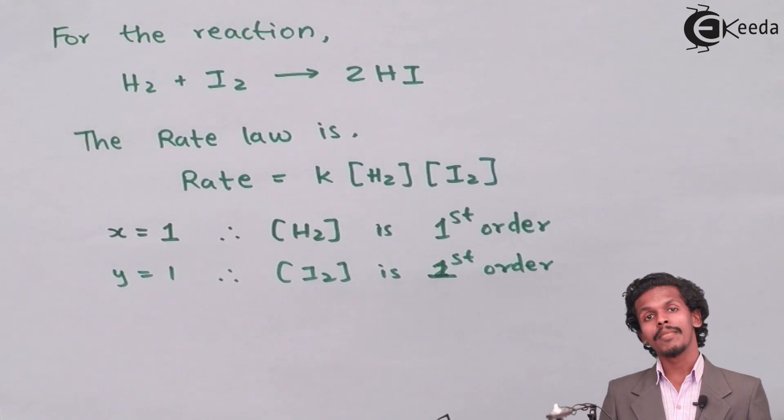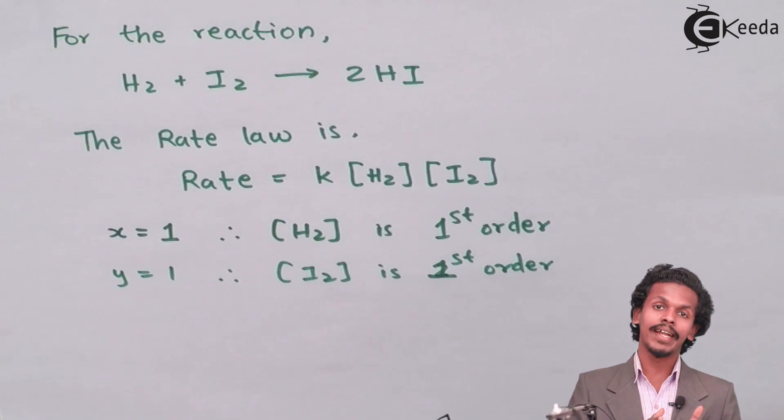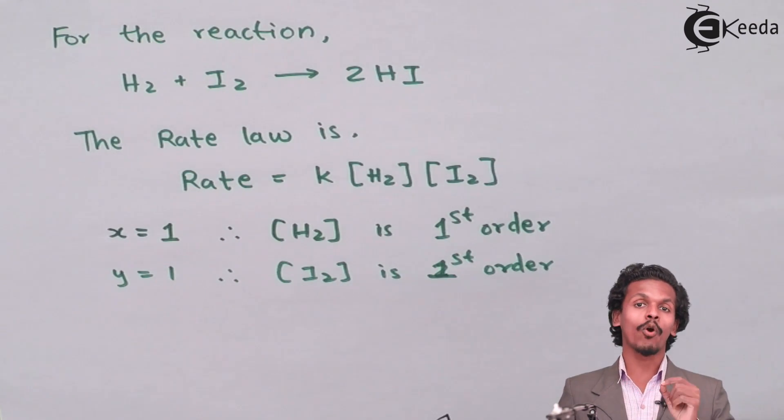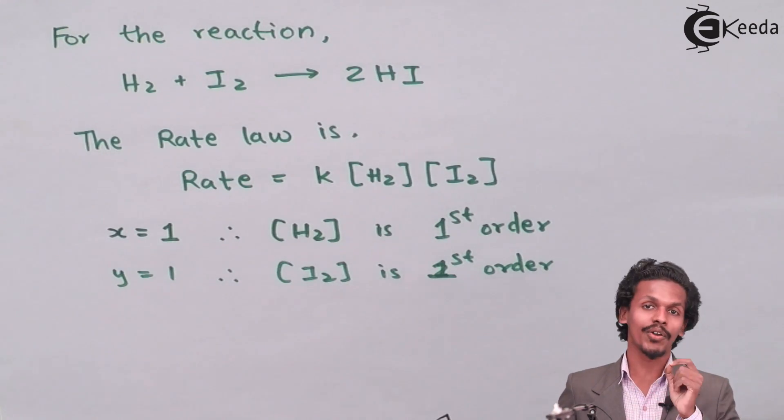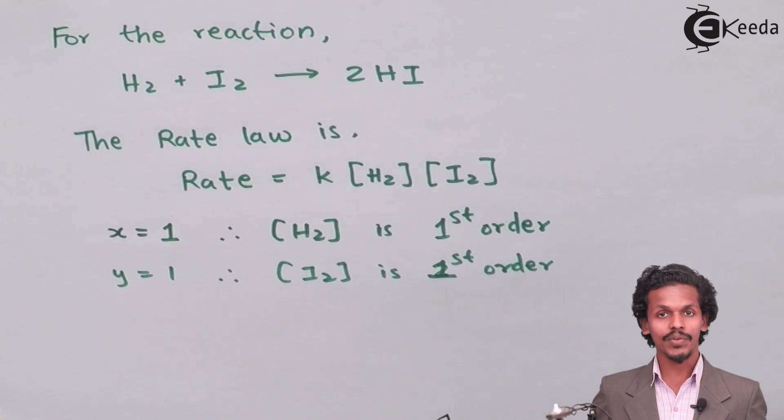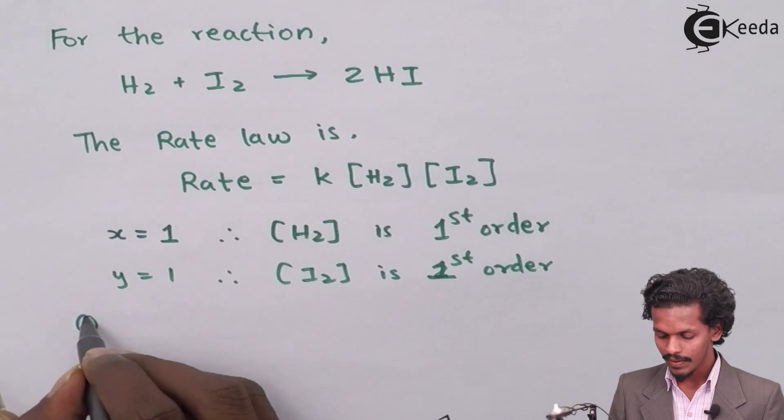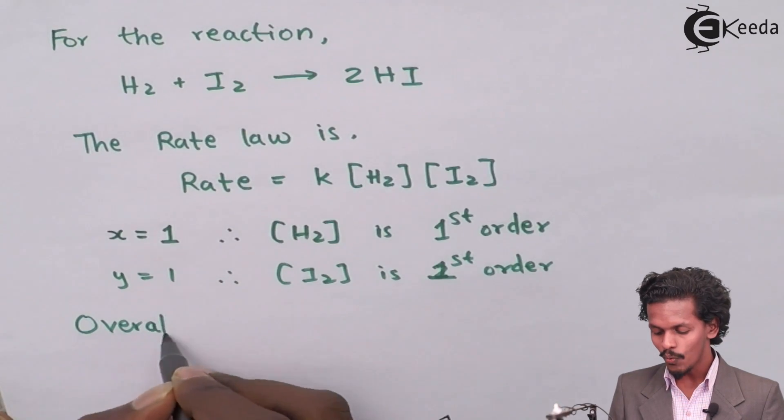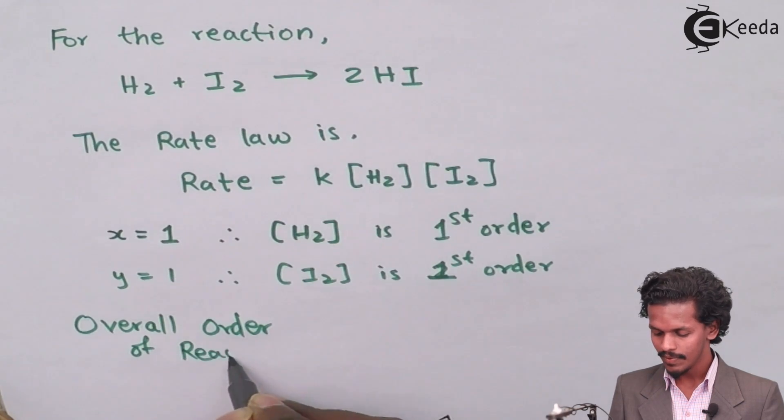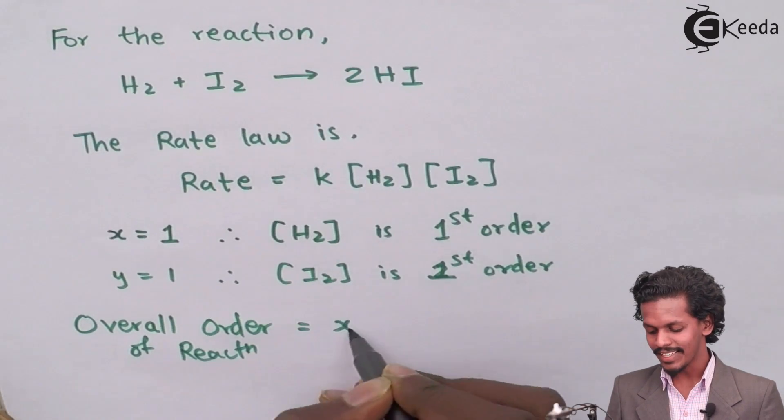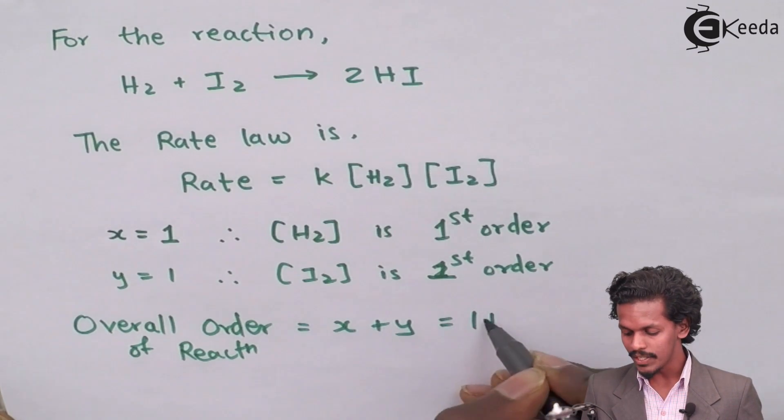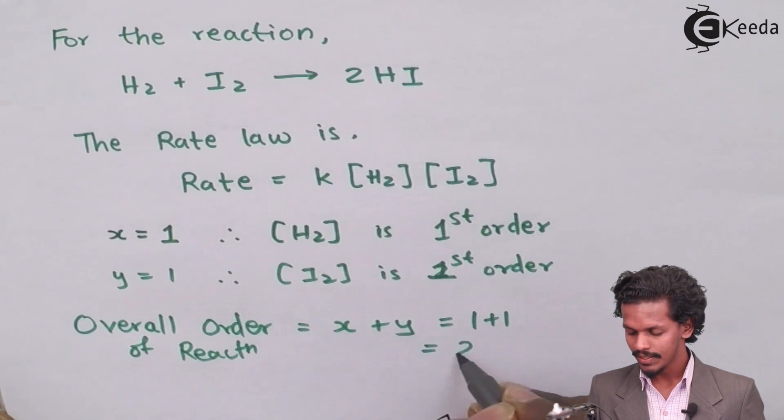So for each reactant, the order can be different or will be the same. So our main concern is what would be the overall order of reaction. So for that instance, suppose if I would say, the overall order of reaction will be X plus Y. So in this case, 1 plus 1, which means 2.